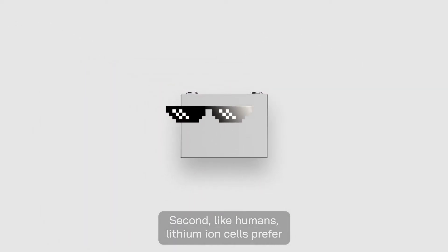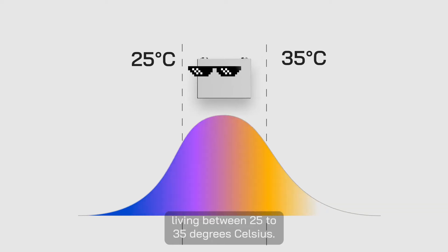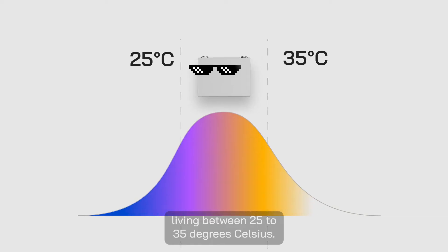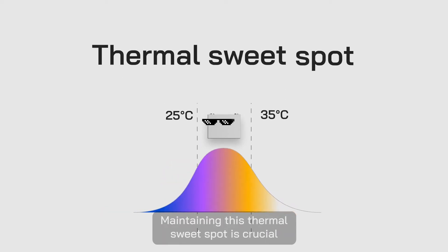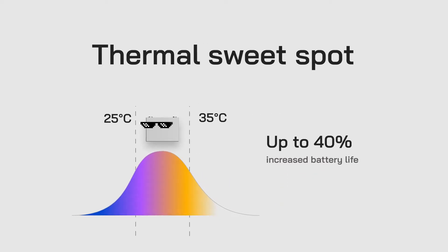Second, like humans, lithium-ion cells prefer living between 25 to 35 degrees Celsius. Maintaining this thermal sweet spot is crucial to extending their life by up to 40%.